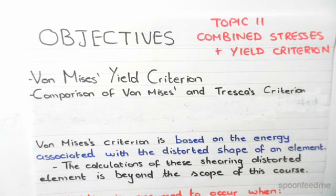So what is von Mises? It's the second of the two yield criterion in combined normal and shear stresses. It's based on the energy associated with the distorted shape of an element.